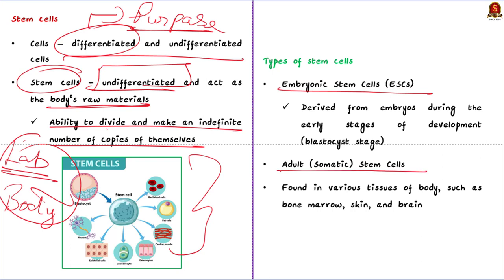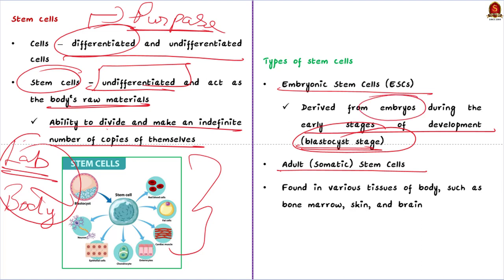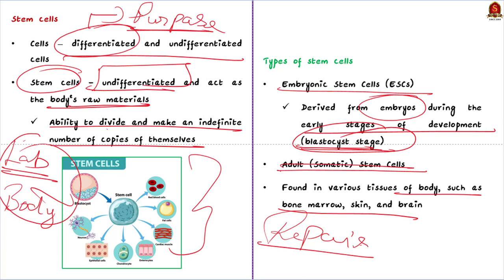There are two main types of stem cells: embryonic stem cells and adult or somatic stem cells. Embryonic stem cells are derived from the embryo during the early stages of development at the blastocyst stage. They have the potential to differentiate into any type of cell in the body but are controversial due to ethical concerns related to the use of embryos. Adult or somatic stem cells are found in various tissues such as bone marrow, skin, and brain, with limited differentiation potential, and are responsible for maintenance and repair of specific tissues.